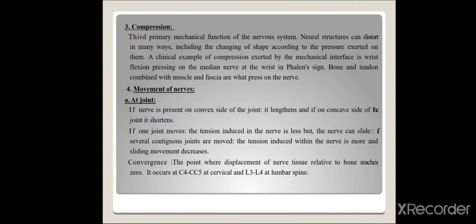Shacklock's fourth concept covers movement of nerves, which can occur at joints due to nerve bending, movement of innervated structures, and movement of the mechanical interface. At joints, if the nerve is on the convex side it will lengthen; if on the concave side it will shorten. When one joint moves, the tension developed in the nerve is less compared to when the entire articular chain moves in a direction to produce greater tension.